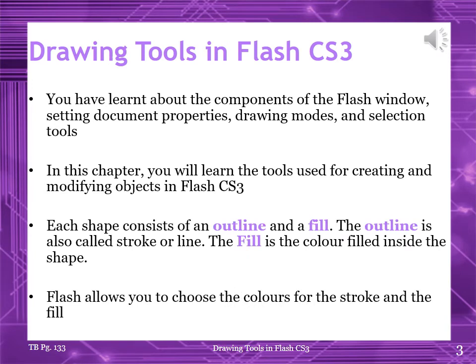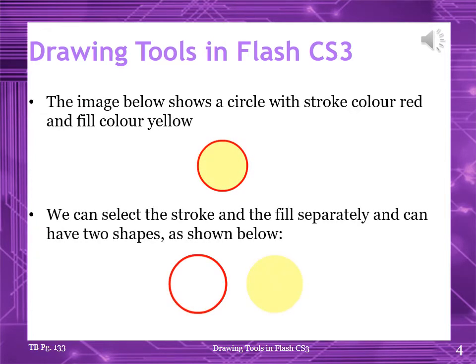I am going to start reading from page number 133. You can open your book as well. In the last chapter you learned about the components of the Flash Windows, setting, document properties, drawing modules and selection tools. In this chapter you will be introduced to the tools used for creating and modifying objects in Flash CS3. Each shape can consist of an outline called the stroke or line, and a fill, which is the inside of the shape. Flash allows you to choose the colors for the stroke and the fill. Figure 9.1 shows a circle with stroke color red and fill color yellow. Flash allows you to select the stroke and the fill separately. In figure 9.2, the stroke and the fill of the figure have been separated — now we have two images.